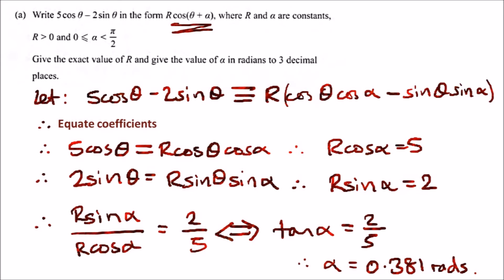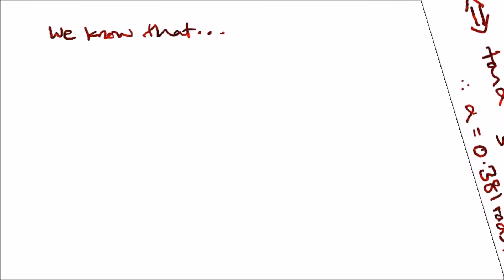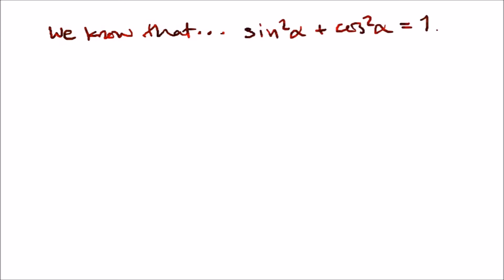Now for r, we can use a trigonometric identity. We should know by now that sin²α + cos²α always equals one.